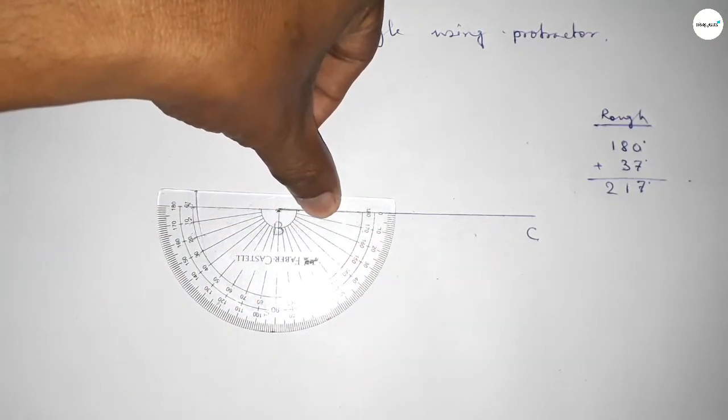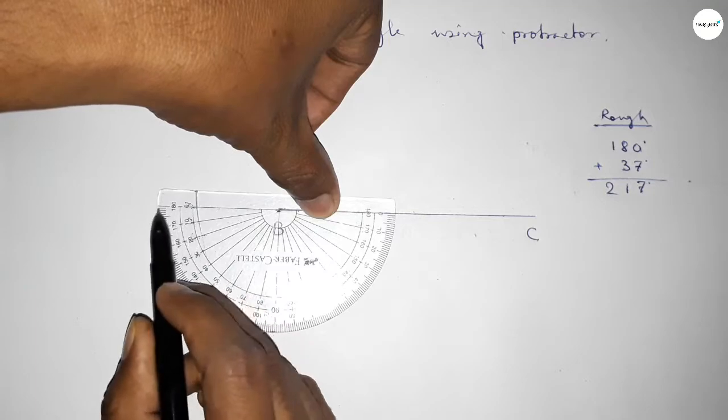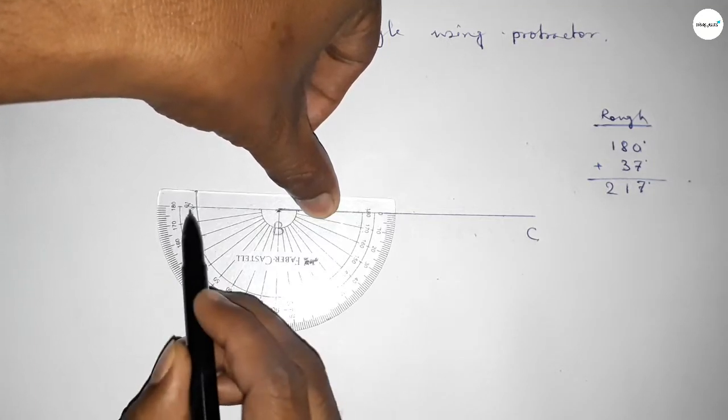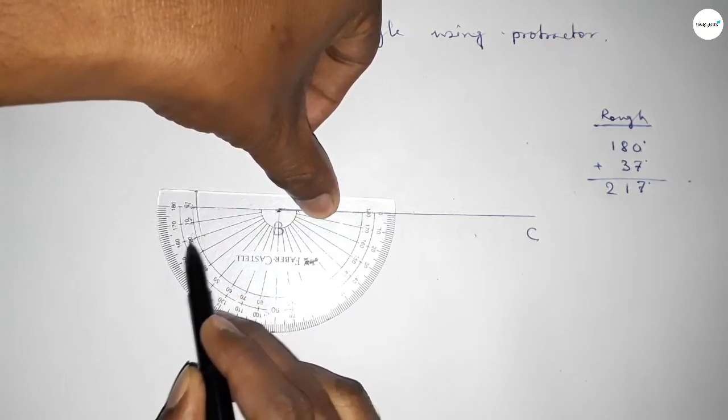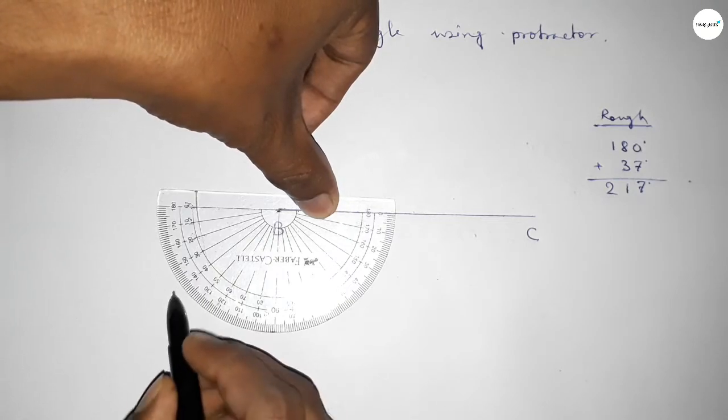And counting 37 degree. So this is 180 degree angle. Also this is starting 0, 10, 20, 30, 35, 36, 37.